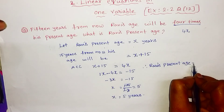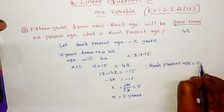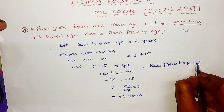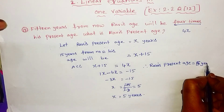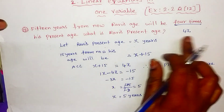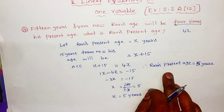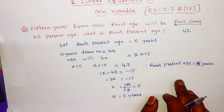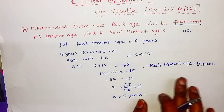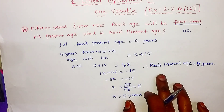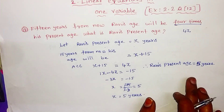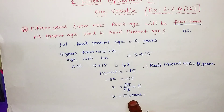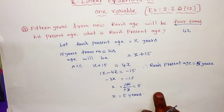Ravi's present age is 5 years. Verification: 4 times x is 4 times 5, which is 20 years. So 15 years from now, Ravi's age will indeed be 20 years, which is 4 times his present age of 5.